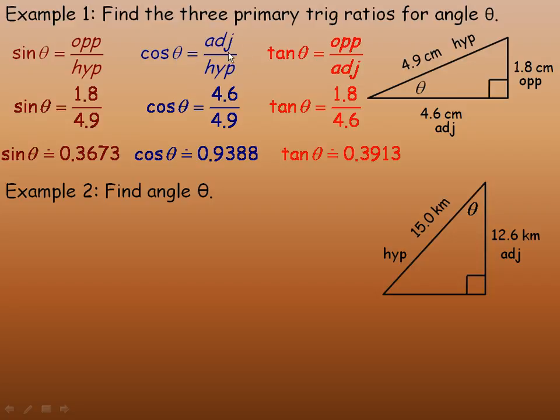Cosine of any angle is adjacent divided by hypotenuse. So since those two sides, the two sides that I do know, are the ones used to find cos, that's why I would use cosine to find the angle.